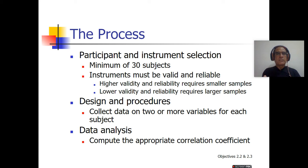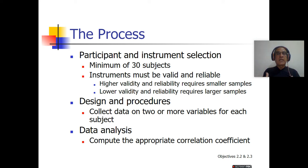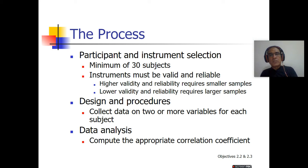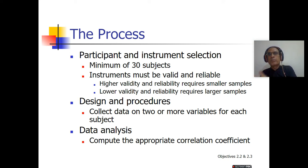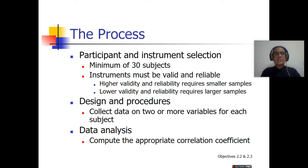In the correlation research process, participant and instrument selection is important. For the selection of participants, there should be a minimum of 30 subjects. If there are fewer than 30 subjects, we cannot run the data in correlation research software like SPSS. We also select instruments and check their validity and reliability. Higher validity and reliability is required for smaller samples, whereas lower validity and reliability is required for larger samples.